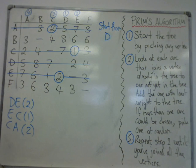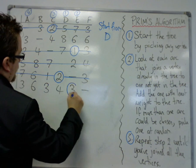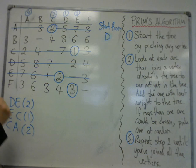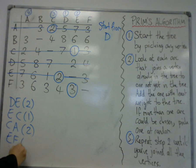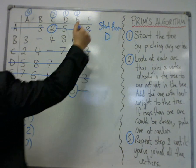I can choose whichever one I like, so I'm going to choose this one, that 3 there, E to F. Okay, delete the rest of the row. That connects me to F.